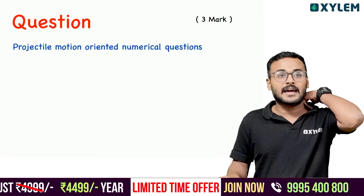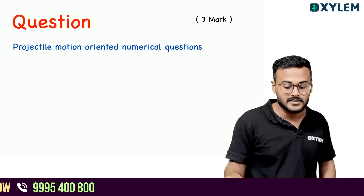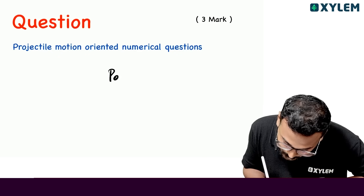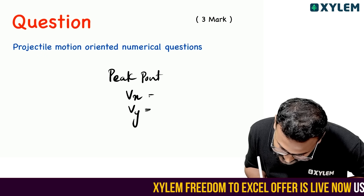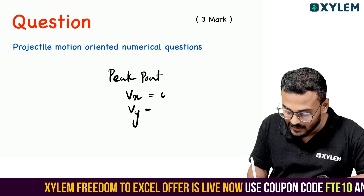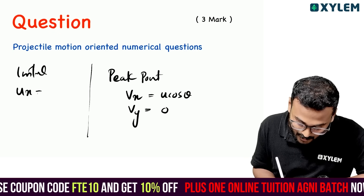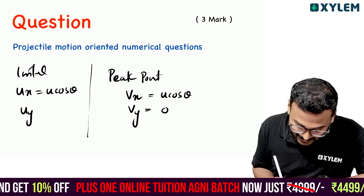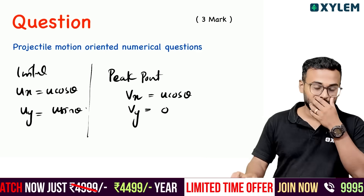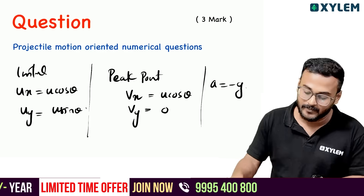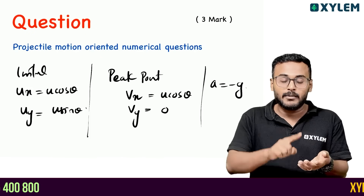Projectile motion oriented numericals: maximum height and time of flight oriented numericals — 100% sure. Peakmost point: vertical velocity is zero. ux equals u cos theta, uy equals u sin theta. At the peakmost point, vertical velocity is zero and acceleration is minus g.